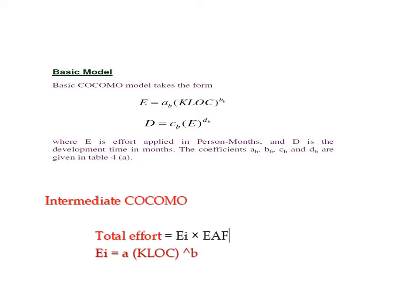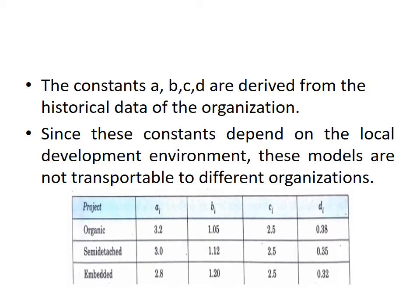In the Basic model, effort is estimated using the equation: Effort = A × (KLOC)^B, where KLOC is the estimated size in kilo-lines of code. Duration is calculated as: Duration = C × (Effort)^D, where effort is in person-months and D gives development time in months. In Intermediate COCOMO, total effort is estimated as: Effort = EI × EIF, where EI is the initial effort and EIF is the Effort Adjustment Factor. The initial effort EI is calculated using the same equation: EI = A × (KLOC)^B.